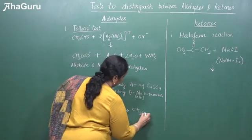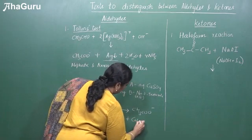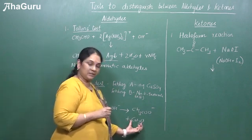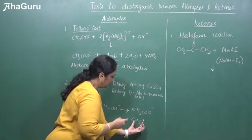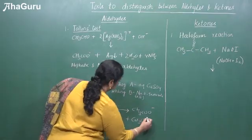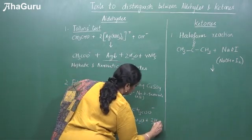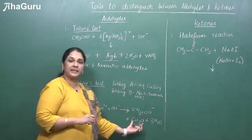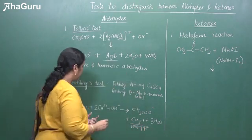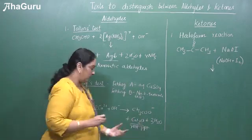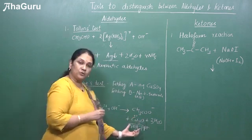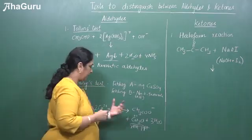The copper, which was in the +2 oxidation state, will now get reduced to Cu₂O — that is, copper is getting reduced and the aldehyde is getting oxidized, plus water is produced. In the observation, we will see Cu₂O as a red precipitate. Copper is getting reduced from +2 to +1 state; this is called cuprous oxide. When you do the experiment you can see a red precipitate forming.